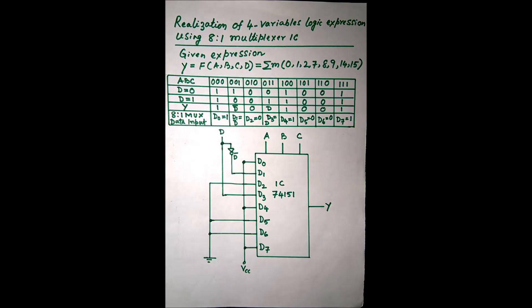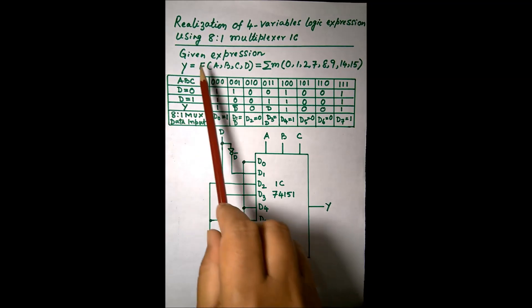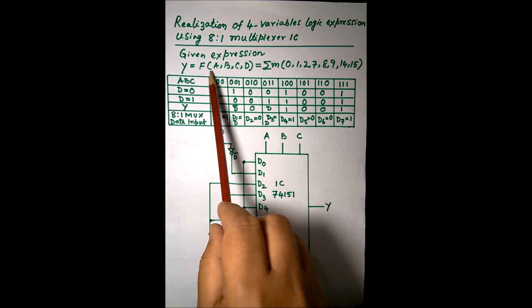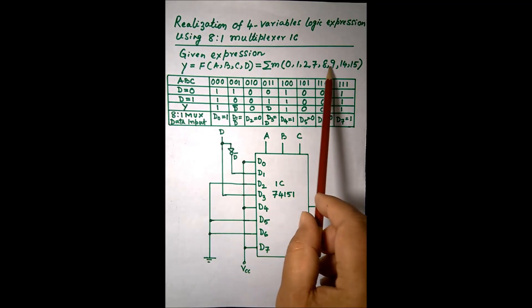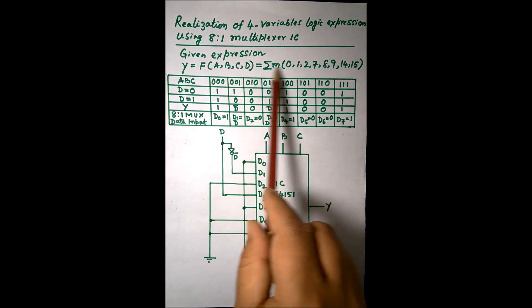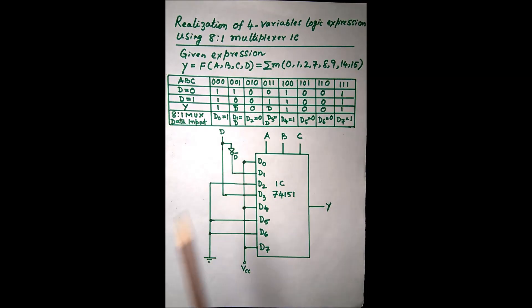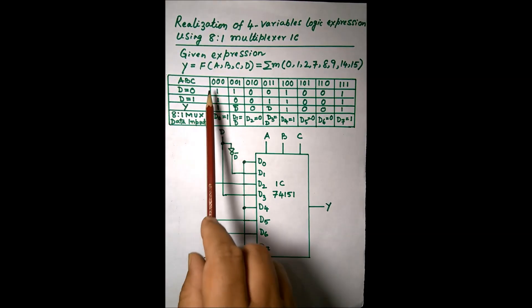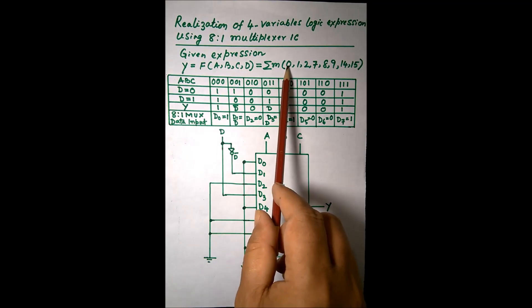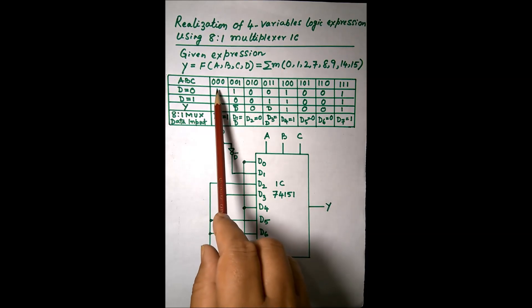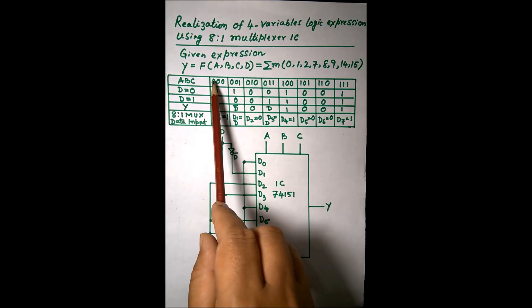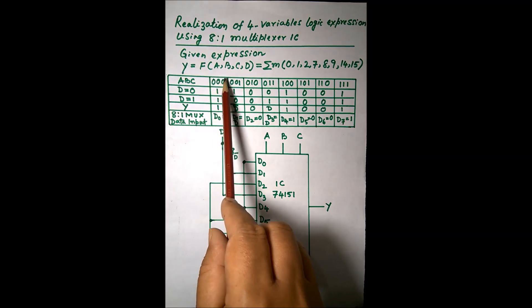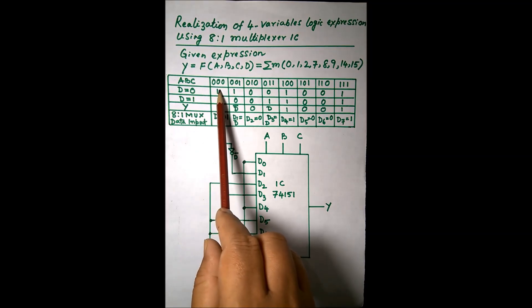Realization of a 4-variable logic expression using an 8-to-1 multiplexer IC. The given expression has variables A, B, C, D, and the minterms are given. Because minterm m0 is present, at A=0, B=0, C=0, and D=0, we are putting 1.